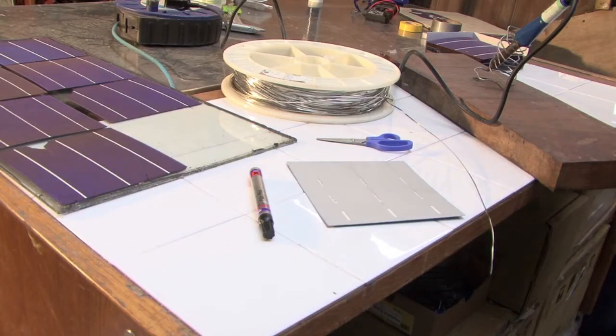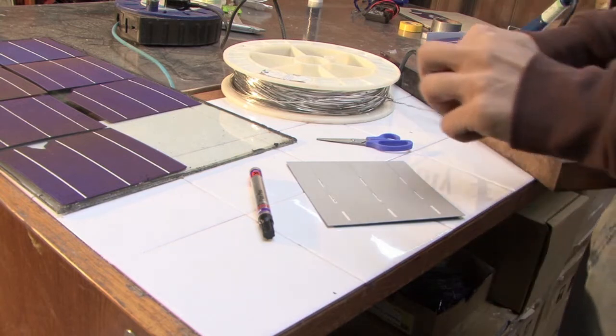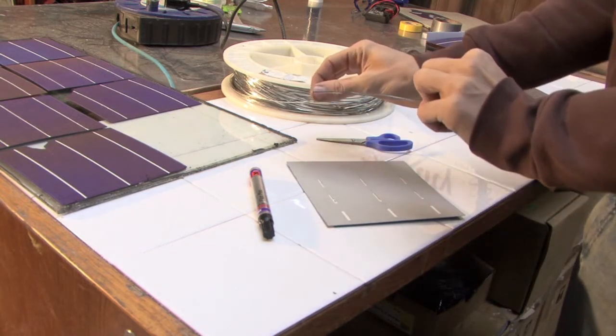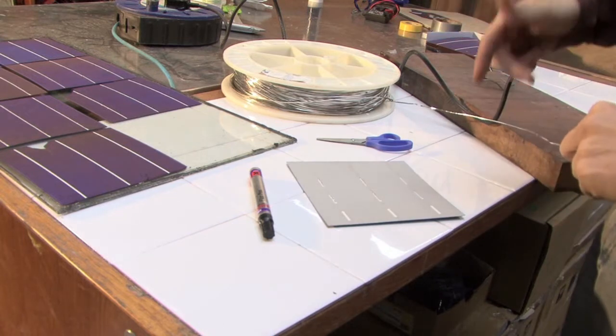The first stage in creating our series circuit is to solder tabbing wire onto the back of each cell. We're only going to do one side of each cell to begin with.